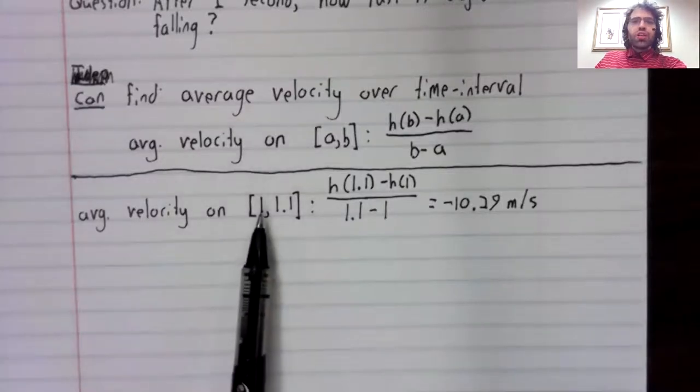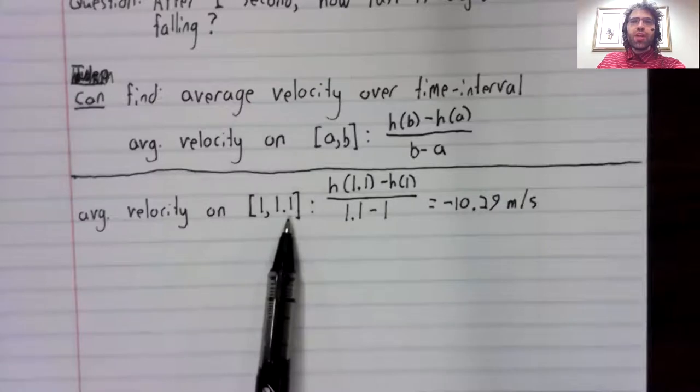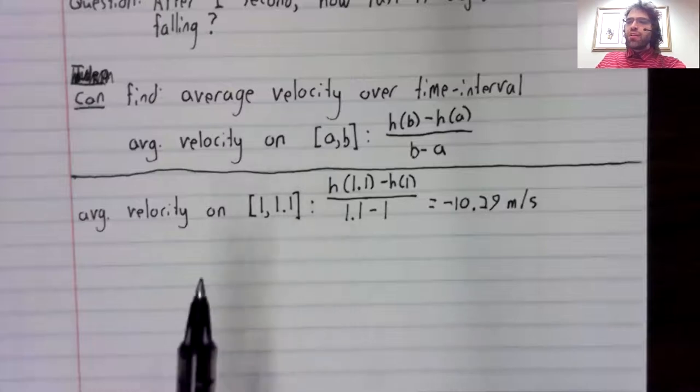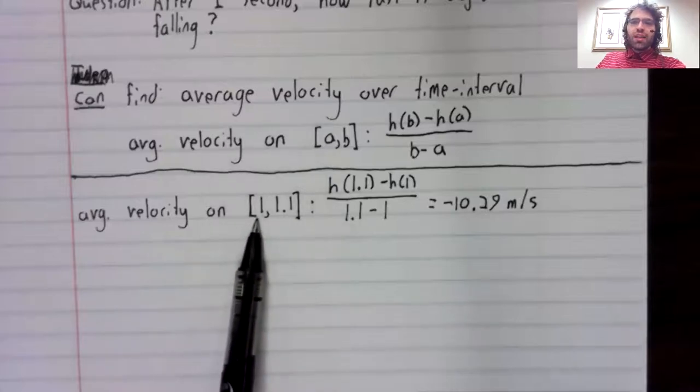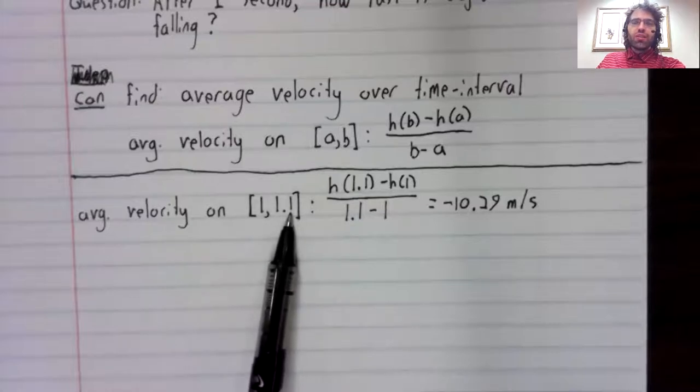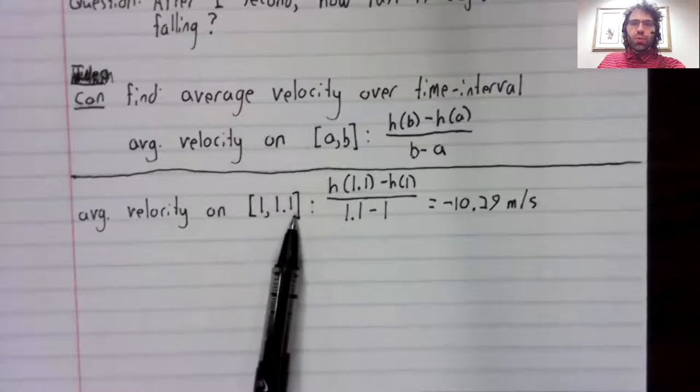If only a little time passes, 0.1 seconds, the object isn't accelerating much over this interval, and the velocity at the beginning of the interval and the velocity at the end of the interval should be approximately equal.